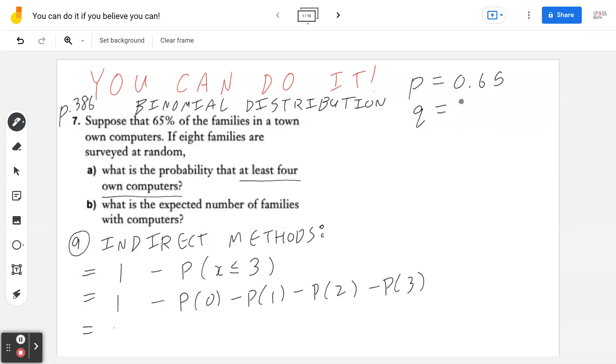Recognizing that q is going to be 1 minus p, this means q is going to be 1 minus 0.65, which is 0.35. So p plus q adds up to 1, which means 65% plus 35% equals the 100%.